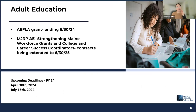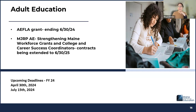This is Megan Dichter, Director of Adult Education. Our AFLA grant is ending June 30, 2024 — that is the last continuation cycle of a five-year grant, so there will be no carryover. Our Maine Jobs and Recovery Plan, adult ed strengthening Maine workforce grants, and college and career success coordinators have been extended to June 30, 2025, so we'll be working on new or amended contracts for those programs. Invoices are due April 30th, and the final invoice for the AFLA grant will be due July 15th.